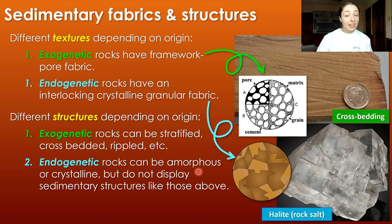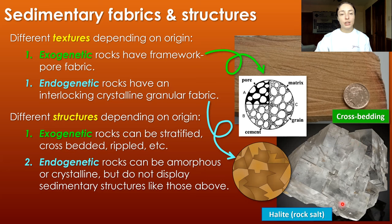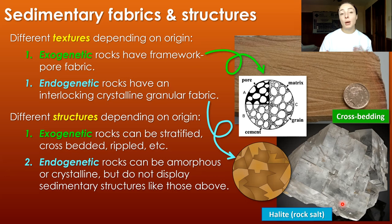Instead, endogenetic rocks can be either amorphous — blobby in structure — or crystalline, as we see in this halite over here. But they do not show large-scale sedimentary structures that we can use for determining depositional environment, like I've talked about many times in my depositional systems playlist.